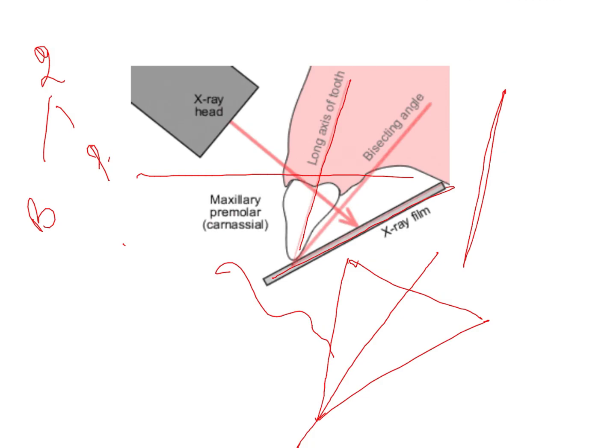The advantage is that the film is as close as possible to the tooth structure, and your X-rays are perpendicular to the imaginary line but not to the film. The disadvantage is that since it's perpendicular to the imaginary line and not to the tooth or X-ray film, image distortion is extremely high in the bisecting angle technique.